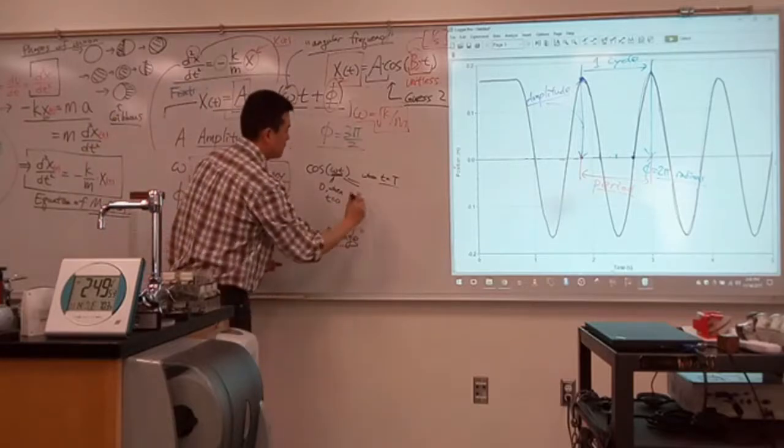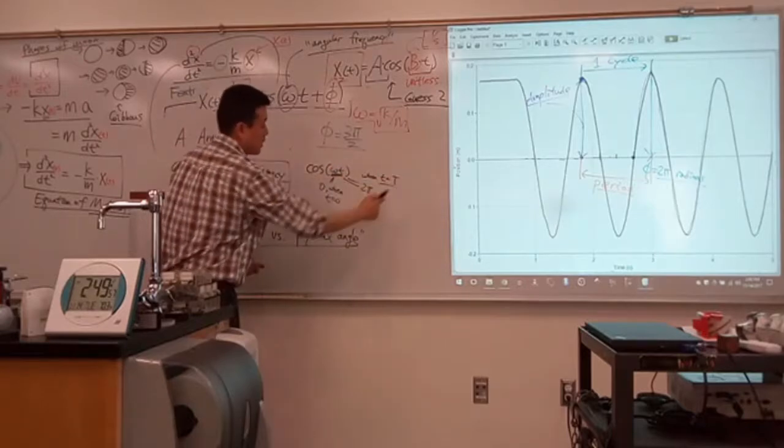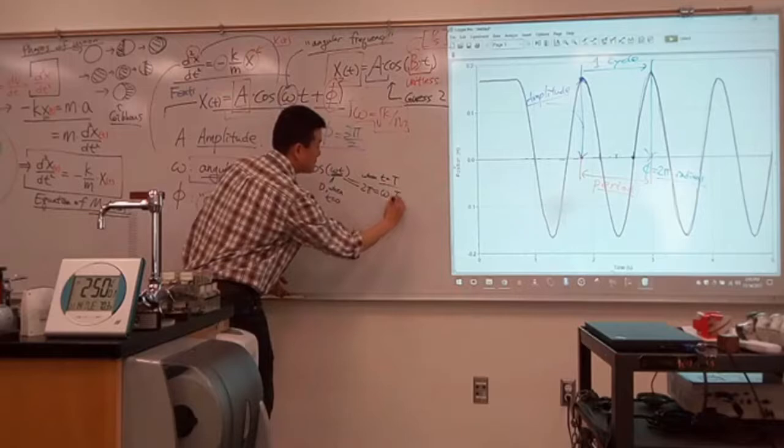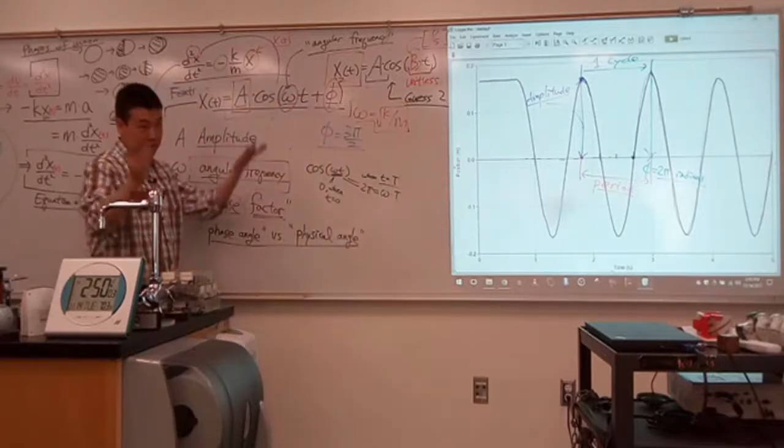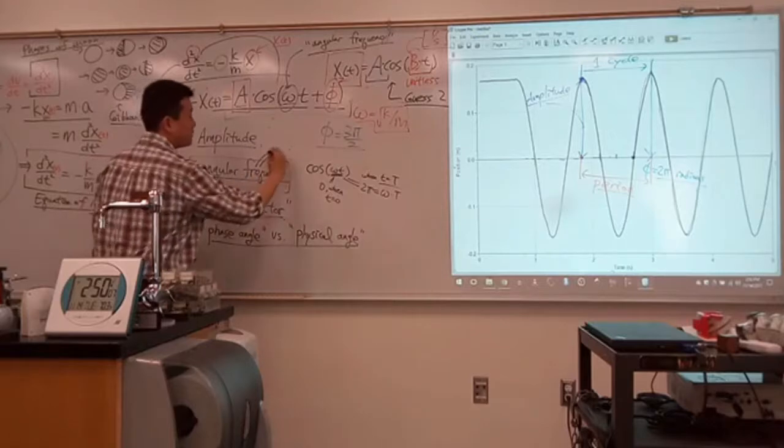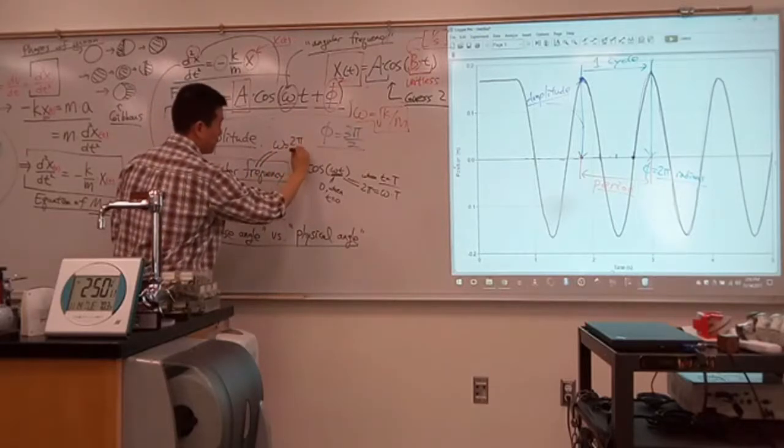Like what should this omega t be equal to? 2 pi, right? It went through one full cycle. So you would say, all right, this should be 2 pi. So omega t should be equal to 2 pi when this t is equal to capital T. In other words, 2 pi is equal to omega times the period. So that's all you need to figure out what omega is. So angular frequency omega, that's equal to 2 pi over the period.